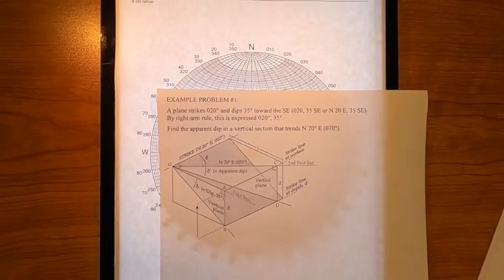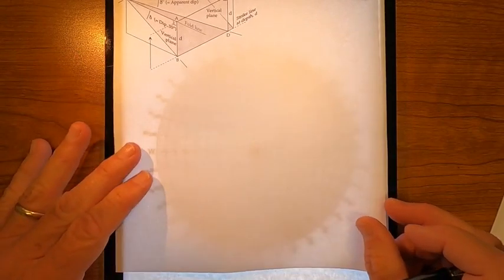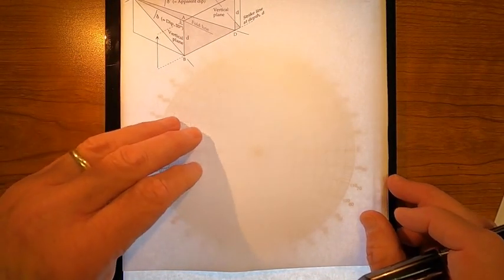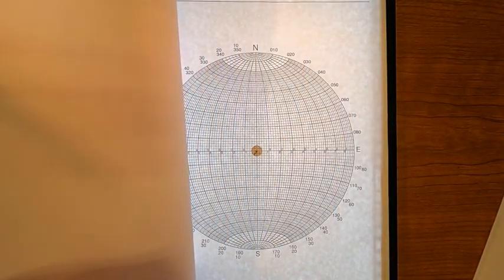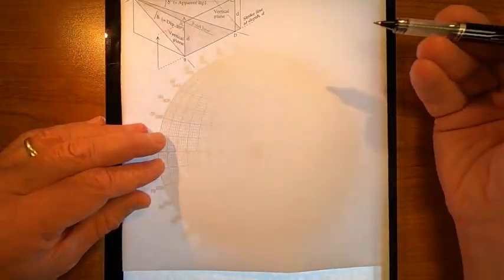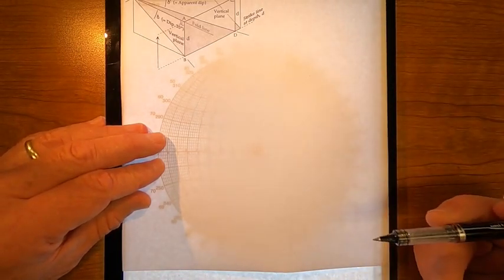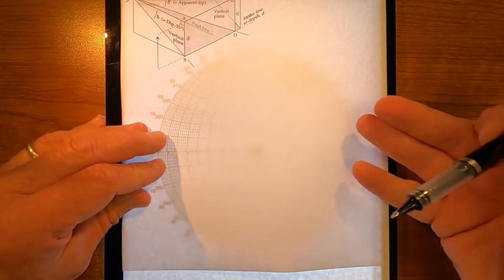I think it'll just fit here on this piece of paper. What I've got here is a stereo net. I'm using a light table, and the reason I'm using a light table is that I'm going to use a pen on a regular piece of paper, and to see the stereo net well through all of that, a light table is handy.